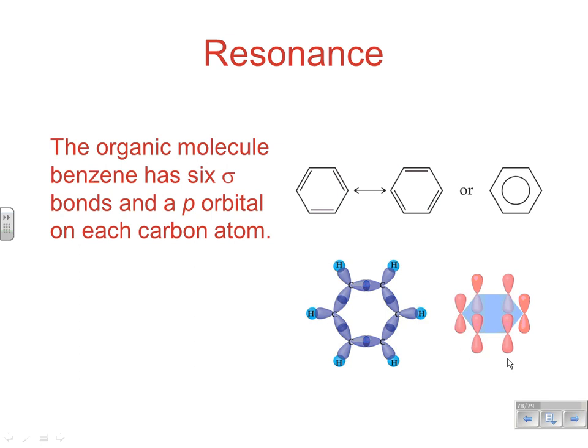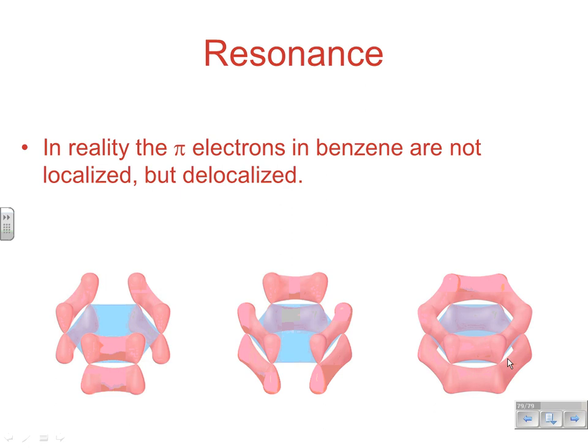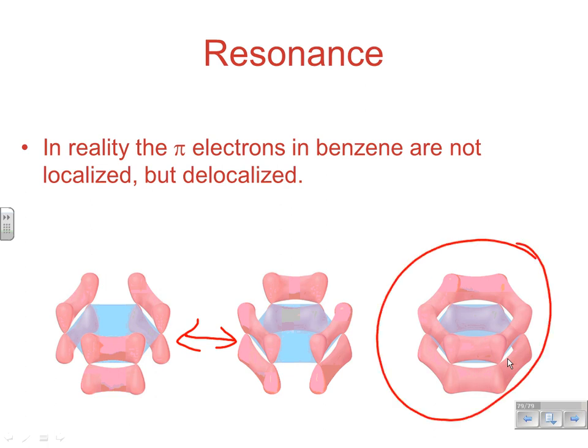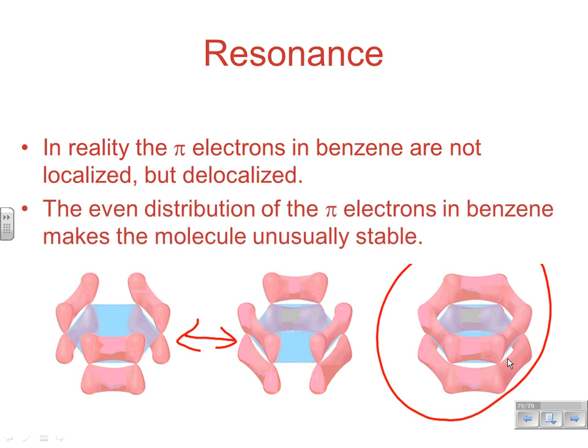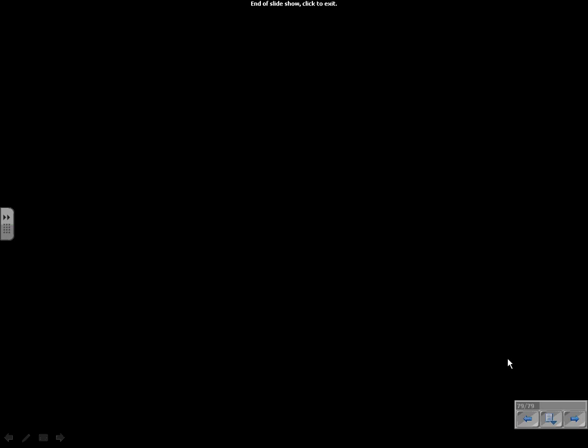Resonance also occurs in molecules like benzene, the aromatic compound with six carbons and alternating double bonds around the ring. Those double bonds are pi electrons at each carbon atom, and they're in resonance, so both structures exist simultaneously. A better visual representation shows the delocalized pi electrons spread throughout the ring. This only applies when dealing with resonance and pi bonding; a normal double bond with no resonance has electrons localized between those two atoms. The even distribution of pi electrons in benzene is really what makes it so unusually stable.